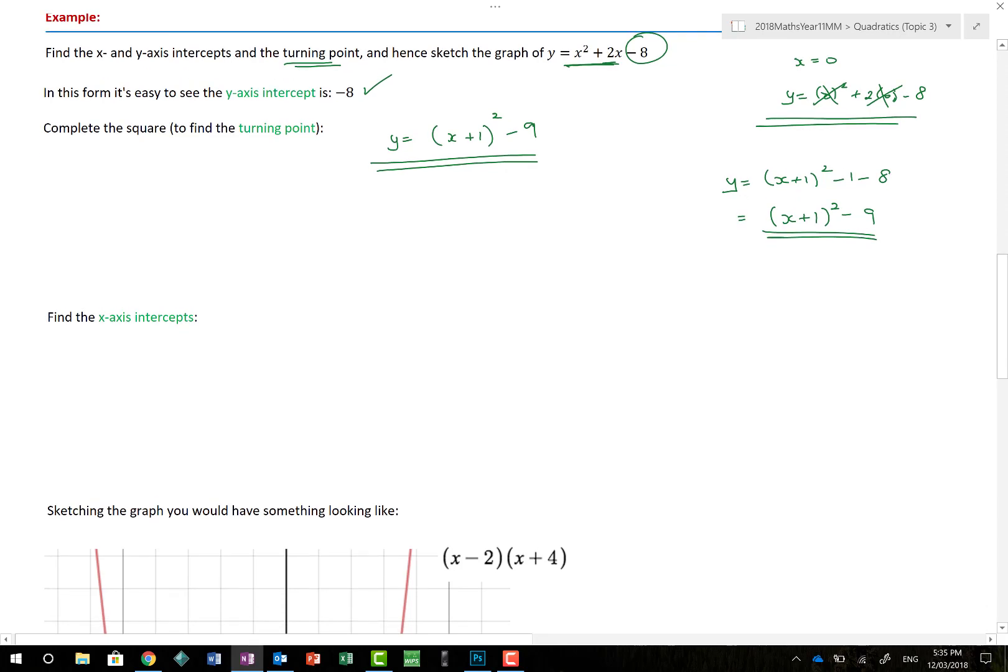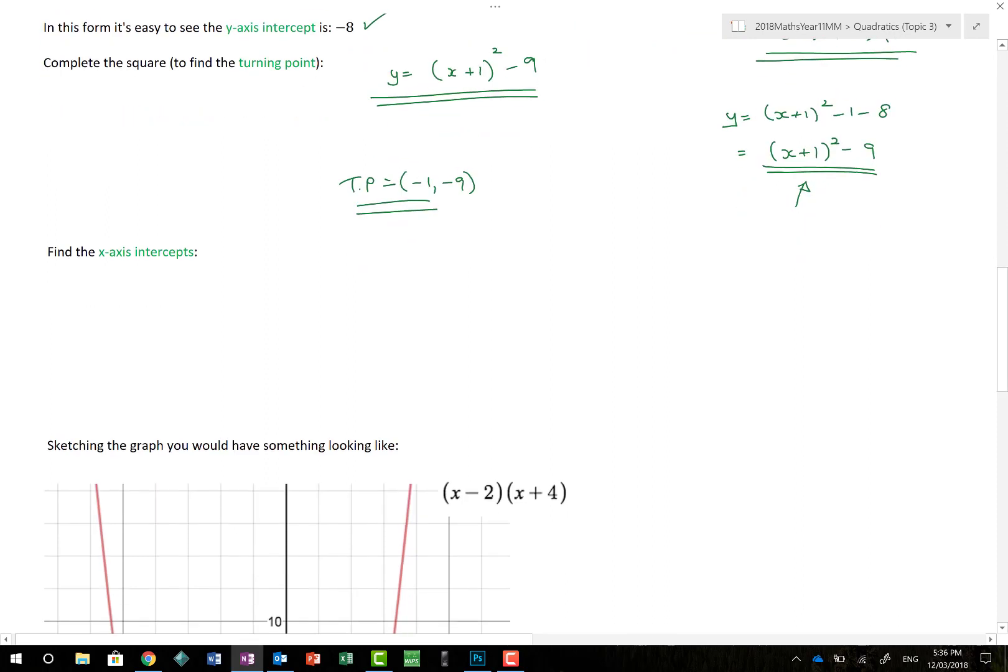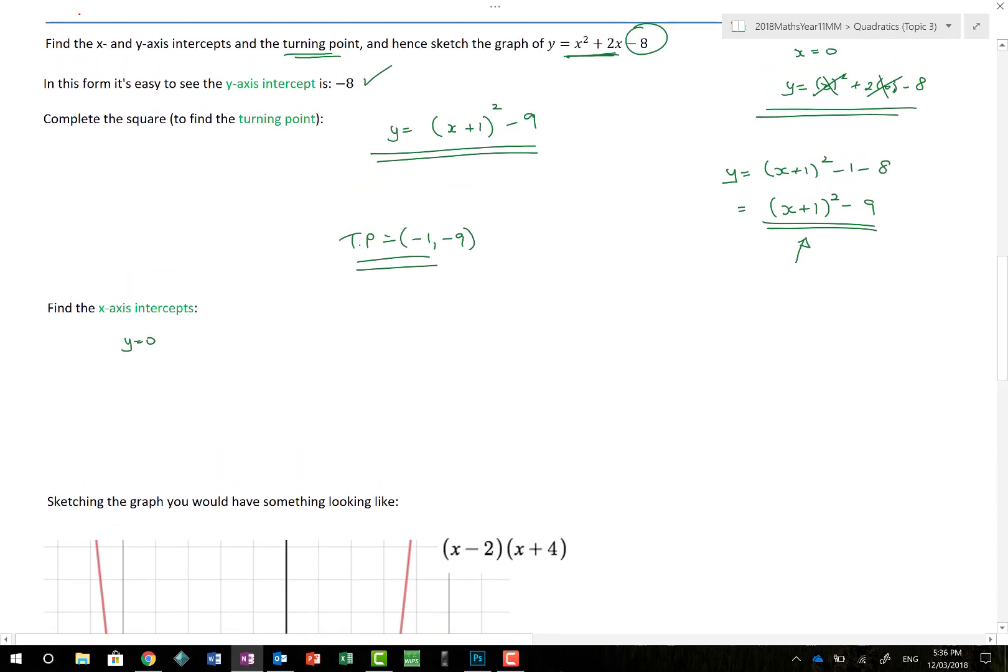So, now I've completed the square to find the turning point. This now gives me my turning point is equal to minus 1 comma minus 9. Remember, it's minus 1 because it's the opposite of what this graph actually tells us. Now, the X-axis intercepts. Well, when we have the X-axis intercepts, what do we know?